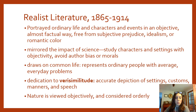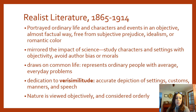Realism literature portrays ordinary life, ordinary characters, and ordinary events in objective, factual ways. There are narrators who remain free of subjective prejudice, idealism, or romantic color. The literature is mirrored by the impact of science, so authors and narrators study their characters and settings and avoid bias. A great new vocab word here is 'verisimilitude' — think of it as 'very similar' — an accurate depiction of settings, customs, manners, and speech of a particular region, time, or culture.